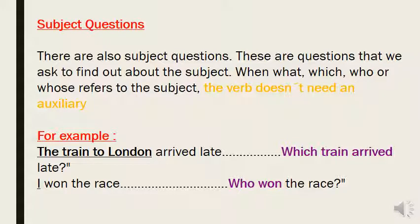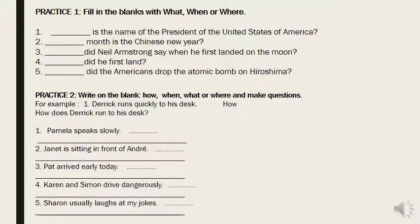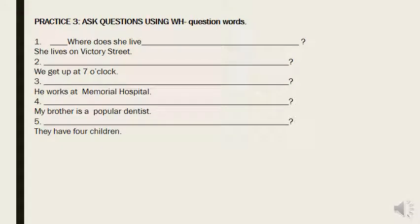Subject questions are questions that ask about the subject. When what, which, who, or whose refers to the subject, the subject doesn't need an auxiliary verb. For example: the train to London arrived late — which train arrived late? I won the race — who won the race? When you ask about the subject, there is no need for an auxiliary verb. Here are some exercises that we are going to solve during the live sessions.